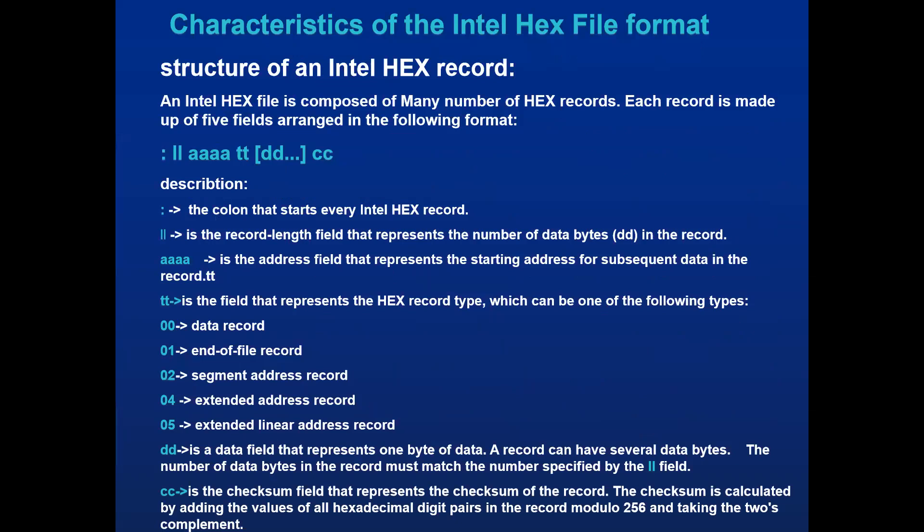This is the structure of the Intel HEX record. Every record starts with a colon, which represents the start of the record. Then LL — the record length, indicating how many bytes are loaded for the record. Next, AAAA represents the short address of that data in memory. Then TT is the field type. Record type 00 is a normal data record, 01 is end of file, 02 is documentation address record, 04 is extended address record, and 05 is extended linear address record.